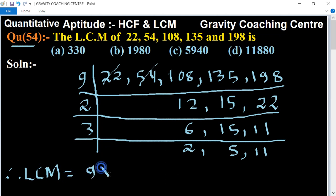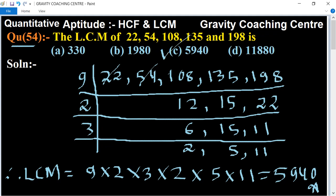9 into 2 into 3 into 2 into 5 into 11 equals 5940. So option C is the right answer.